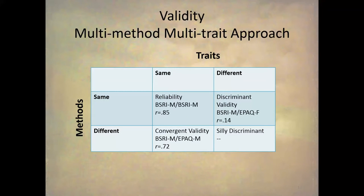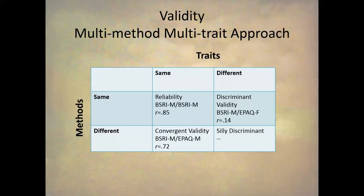For example, when we correlate the BEM Sex Role Inventory masculine scale with itself, we get a correlation of 0.85. All that is is reliability, which we'll get to next.